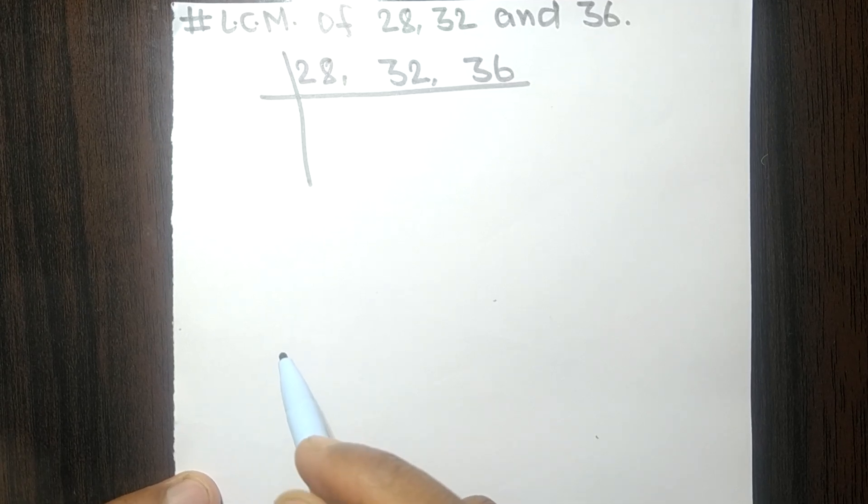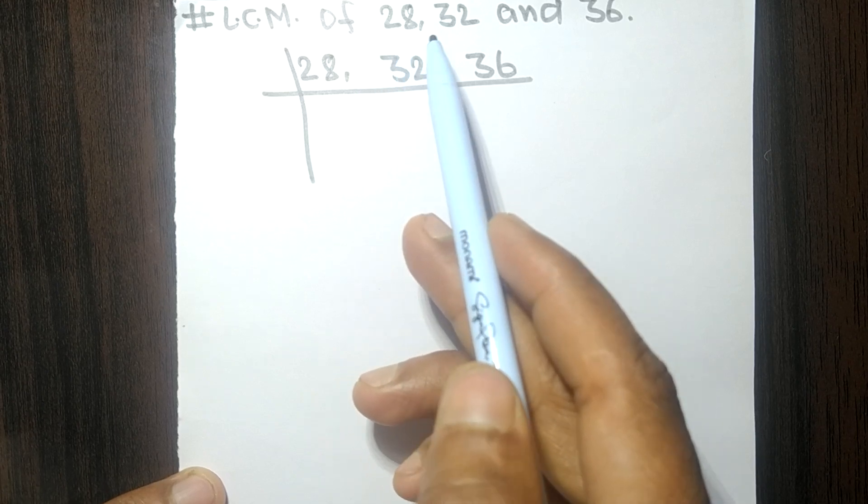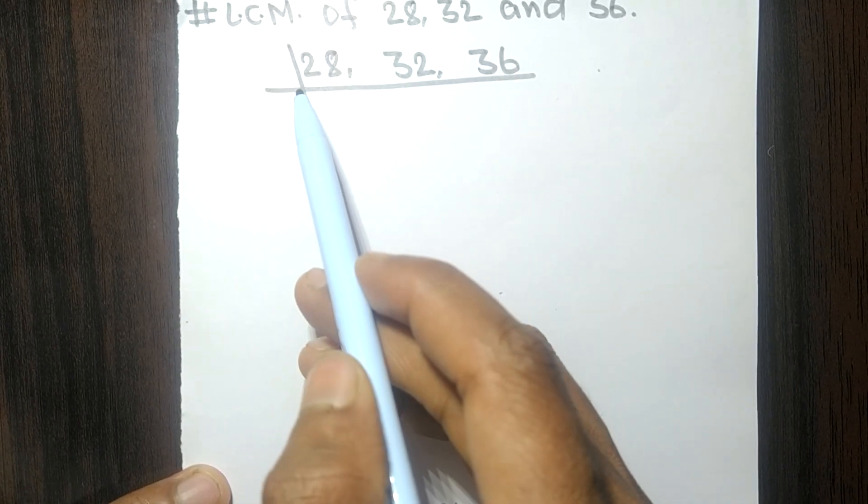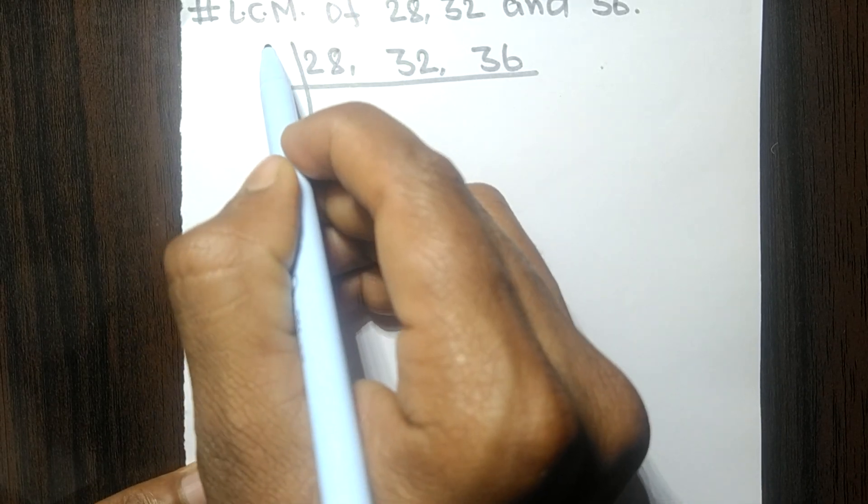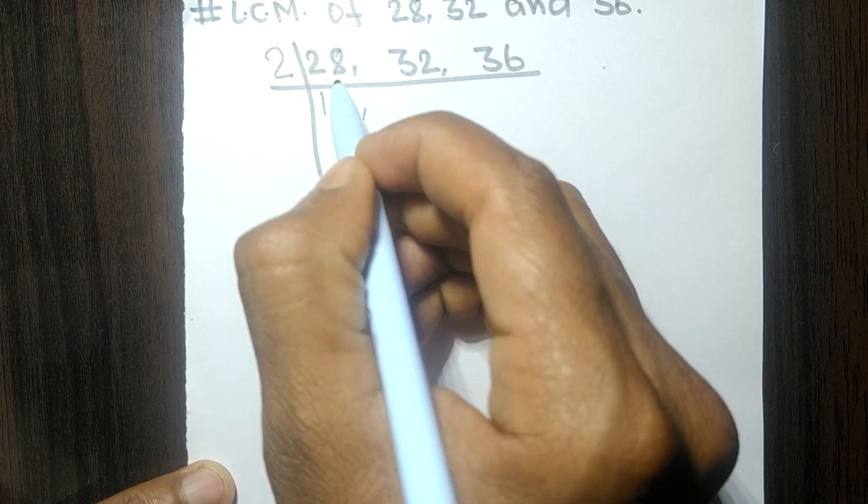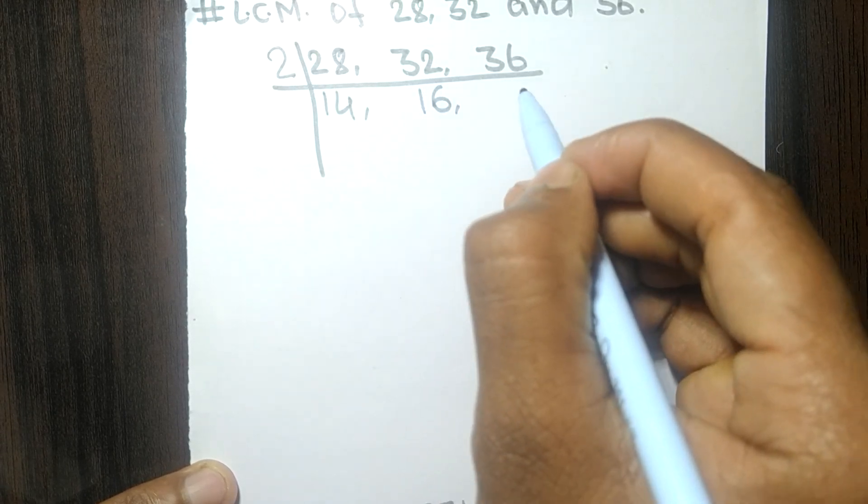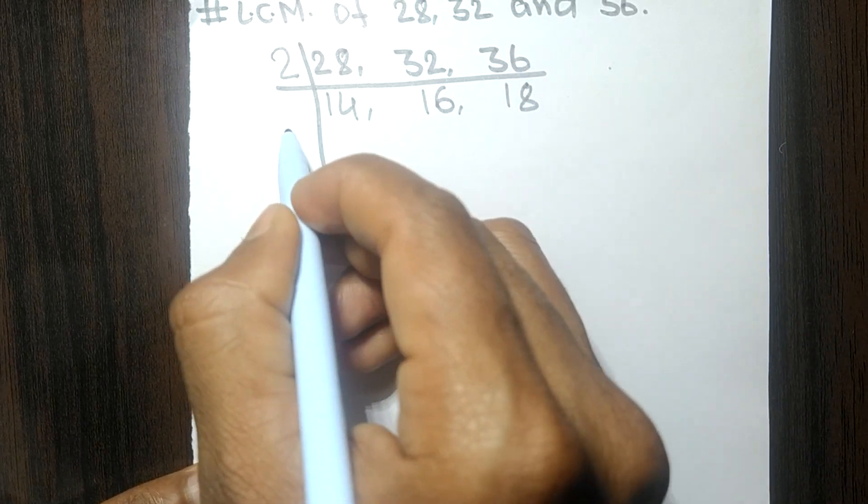So today in this video we shall find LCM of 28, 32, and 36. These all numbers are exactly divisible by 2, so 2 times 14 means 28, 2 times 16 means 32, 2 times 18 means 36.